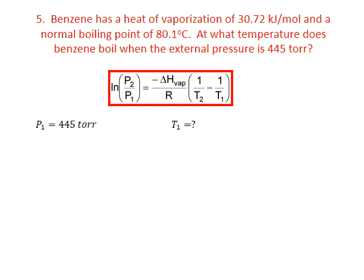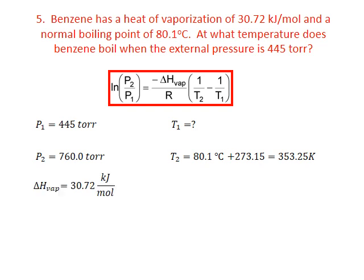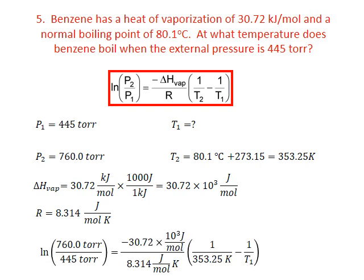This time, we'll set our first data point equal to 445 torr and solve for T1. Our second data point will be the normal boiling point with a vapor pressure of 760 torr and a temperature of 80.1 degrees Celsius, converted to kelvin by adding 273.15. The enthalpy of vaporization is 30.72 kilojoules per mole, converted to joules per mole by multiplying by a thousand. R is 8.314 joules per mole kelvin. We substitute all of this into the two-point form.